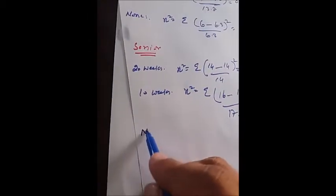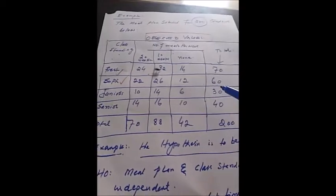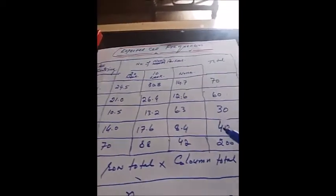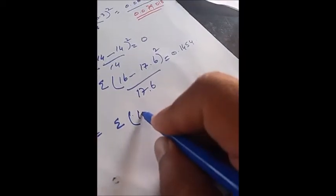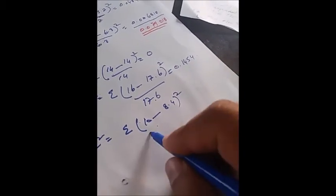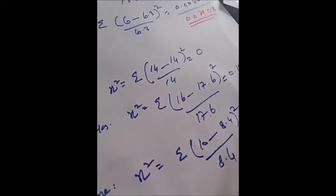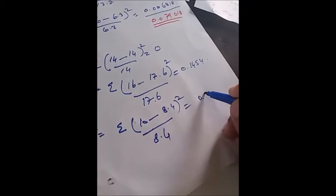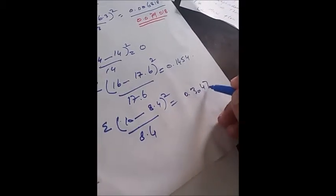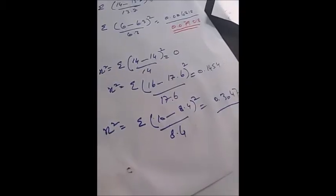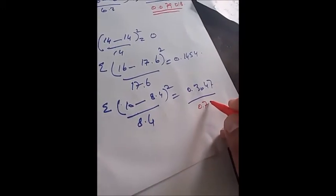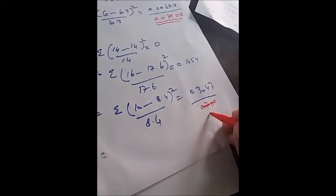For the 'None' category in seniors, chi-square is equal to the summation where the observed value is 10 and the expected value is 8.4. So 10 minus 8.4, whole square, divided by 8.4. The sum total of this frequency will be 0.3047. So the total of these senior frequencies will be 0.4501.